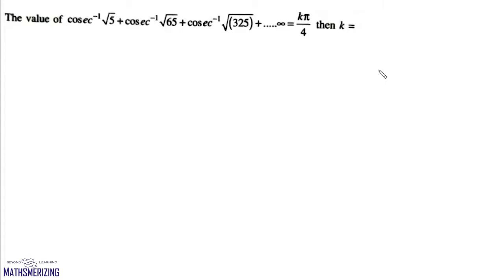Now cosec theta is root 5. So this is theta, this is root 5, this is 1, and here this value will be 2. So we'll write this as tan inverse 1 by 2.